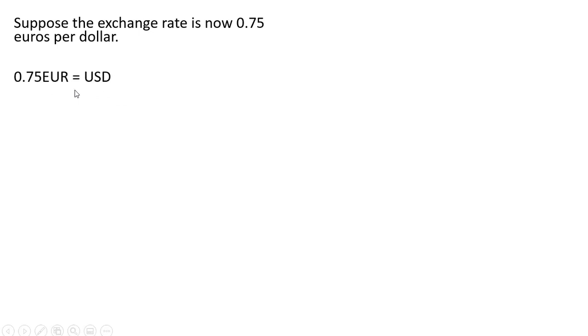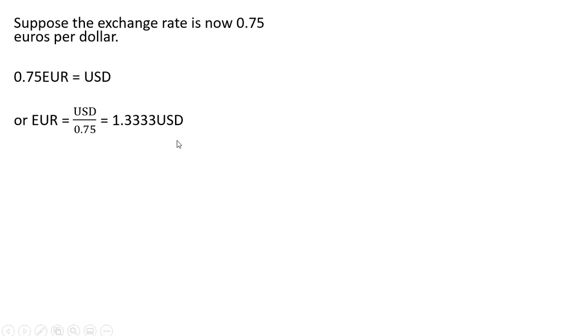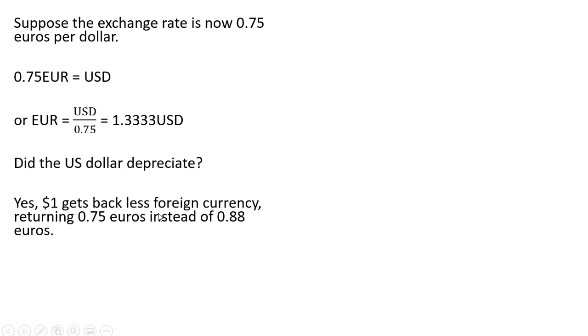Now let's suppose the exchange rate is now 0.75 euros per dollar. That implies the equation 0.75 euros equals 1 US dollar. Dividing through by 0.75, 1 euro equals 1.33 US dollars. Did the US dollar depreciate? Yes — one dollar gets back less foreign currency now, returning only 0.75 euros, where before it returned 0.88 euros.